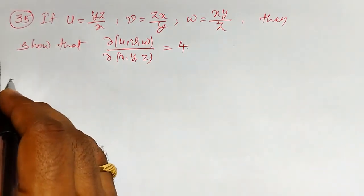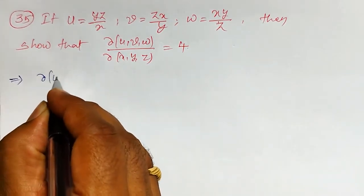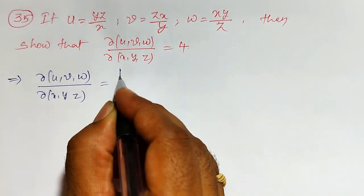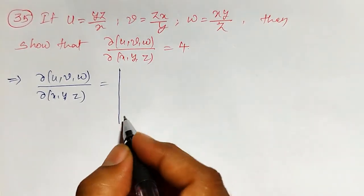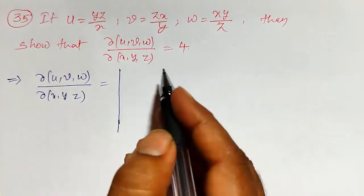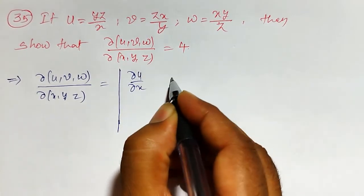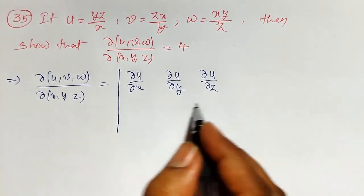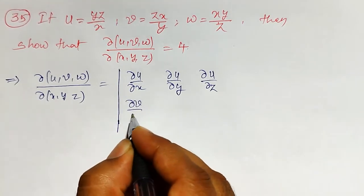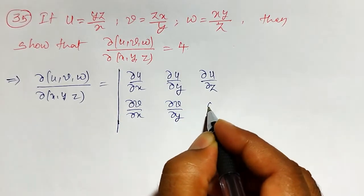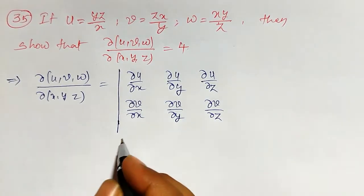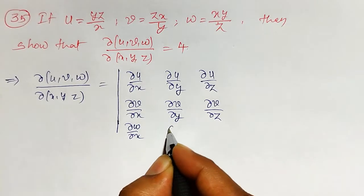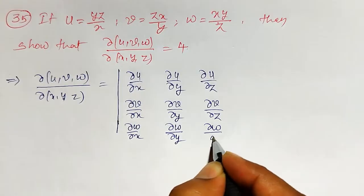Let me first define the Jacobian. The Jacobian ∂(u,v,w)/∂(x,y,z) is defined as a third-order determinant. The first row contains partial derivatives of u: ∂u/∂x, ∂u/∂y, and ∂u/∂z. The second row contains ∂v/∂x, ∂v/∂y, and ∂v/∂z. The third row contains ∂w/∂x, ∂w/∂y, and ∂w/∂z.